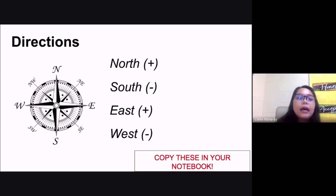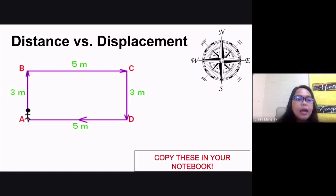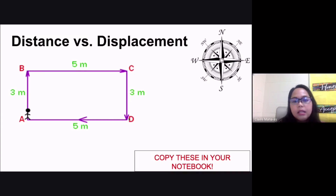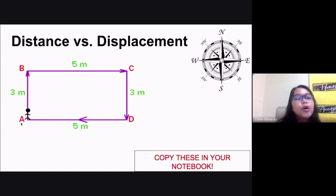Consider this example on the screen. You have a person and four different points: point A, point B, point C, and point D. Point A is the frame of reference — the starting point. The person travels as shown by the purple arrows: first to point B, then to point C, then to point D, then back to point A. The distances traveled are: A to B is 3 meters, B to C is 5 meters, C to D is 3 meters, and D to A is 5 meters.